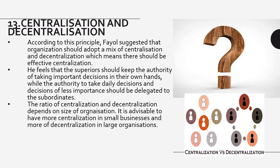Effective centralization means: for the most important decisions — company policies, rules and regulations, top-priority matters — you assign top managers to make those decisions. For everything else, authority is divided accordingly. So there should be a mix of centralization and decentralization. Supervisors or top managers should retain authority over very important decisions, while daily decisions can be delegated to lower-level people.